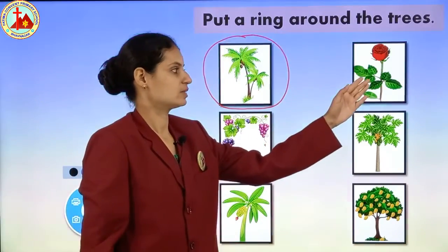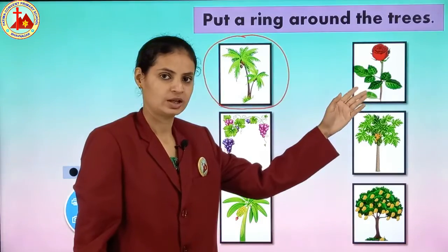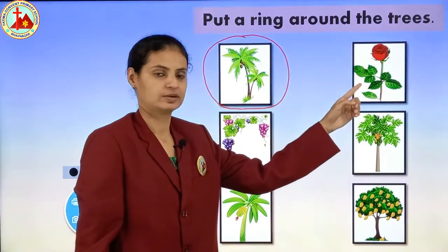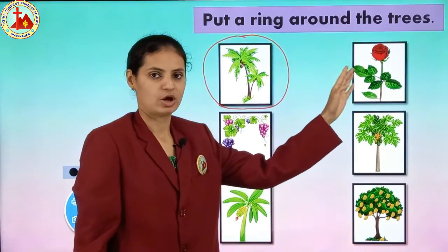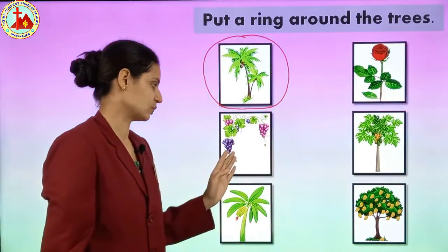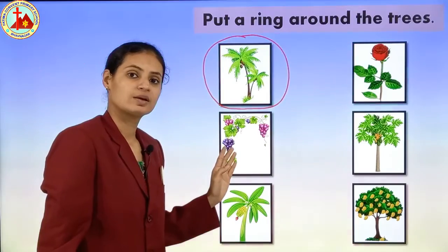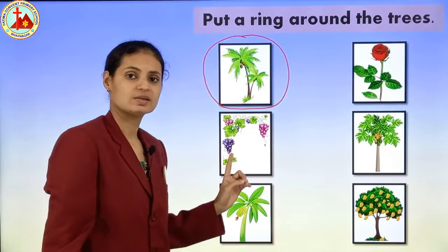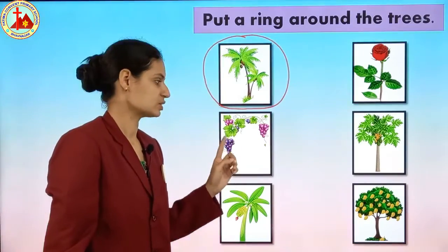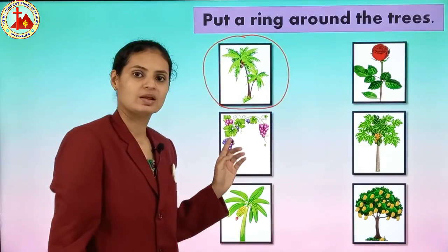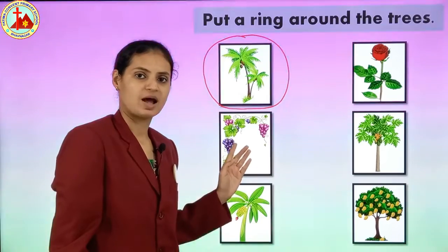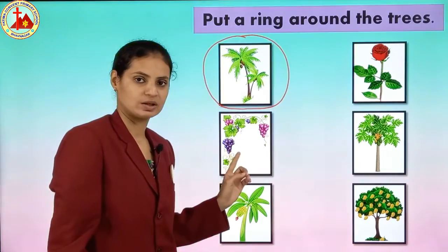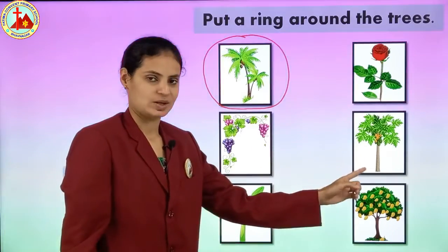Next one. Is this a tree? No. This is the picture of a rose flower and this is not a tree, so we will not put a circle. Next one — this is grapevine. Grapevine is a climber. It is not a tree. Very big plants are called trees. Grapevine is not a tree.